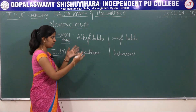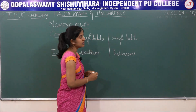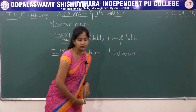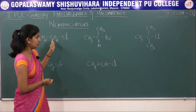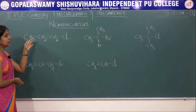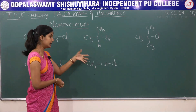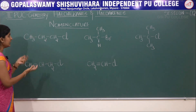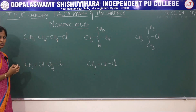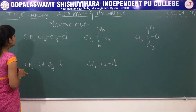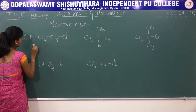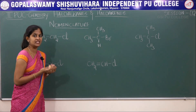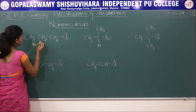Let us take some examples for both haloalkanes and haloarenes, looking at both the common name and the IUPAC name for some important compounds. For the first haloalkane example, the carbon chain is a straight chain with no branching, so I will use the notation 'N' for normal, meaning the carbon chain is a straight chain.